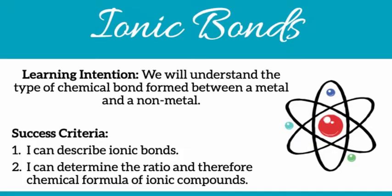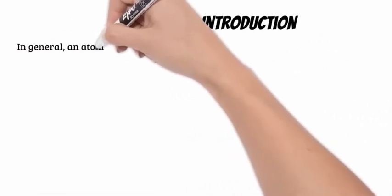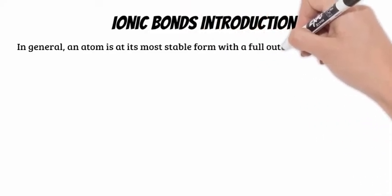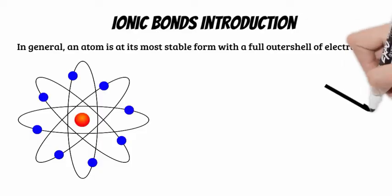In today's video we are going to explore ionic bonds. The aim of all atoms is to become stable. Stability for an atom comes from obtaining a complete outer shell of electrons.